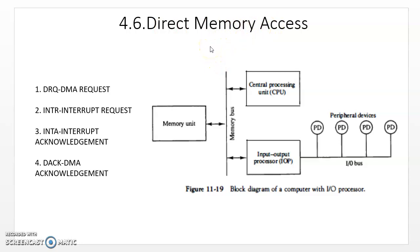What is direct memory access? In those two modes of data transfer, the CPU's intervention is required — the CPU monitors the data transfer between the memory and peripheral devices. The CPU must not be used for unnecessary work; it should only execute instructions in the program or stay idle. It should not do lesser important work like monitoring data transfer, since data transfer is not an intelligent operation. So the data transfer between the memory unit and peripheral devices will be monitored by an input/output processor, or a DMA controller in some computers.